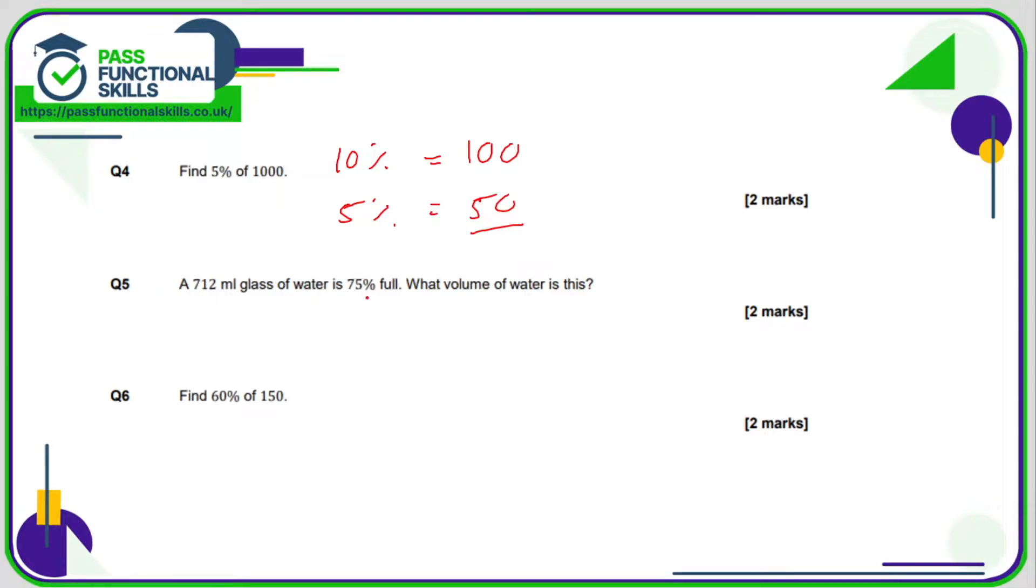Question number 5, a bit harder, but it's a lot easier if we remember that 75% is three quarters. So we're working out what is three quarters of 712. This is a fraction of an amount question. So we take our total, we divide it by the number on the bottom, and then we multiply it by the number on the top. But these calculations aren't that easy, so you might want to use a bus stop. Well, you're definitely going to want to use a bus stop method because you can't use a calculator.